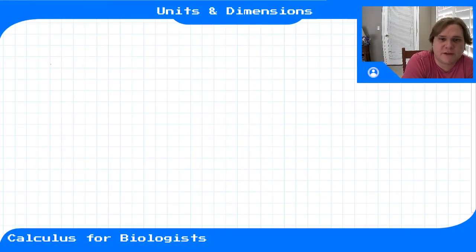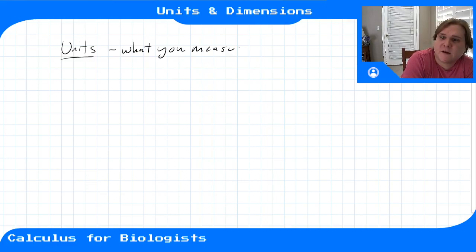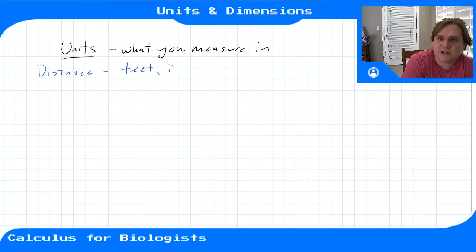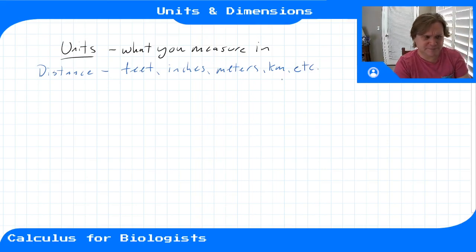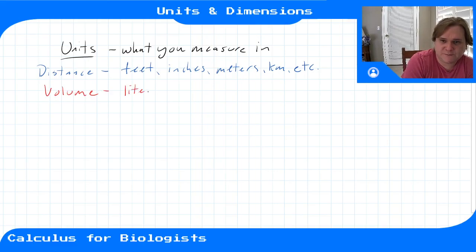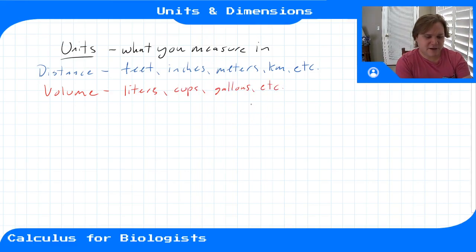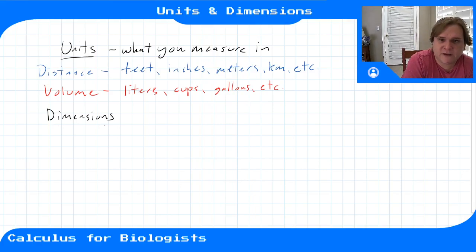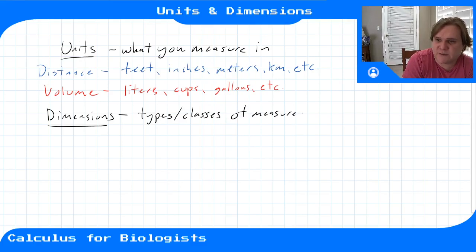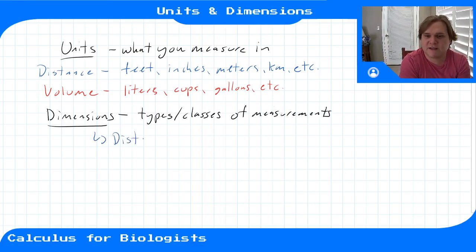In this video we'll be talking about units and dimensions. Whenever you take a measurement, your measurement has units — that's whatever you're measuring in. If you're measuring a distance, your units might be inches, meters, kilometers, whatever. If you're measuring a volume, you might be using liters, cups, or gallons. The dimensions of your measurement are the type or category of measurement — so distance is a type of dimension, and you can measure a dimension in different units.